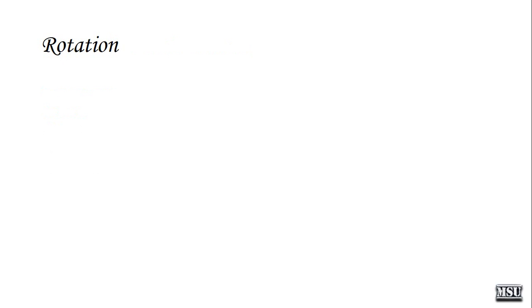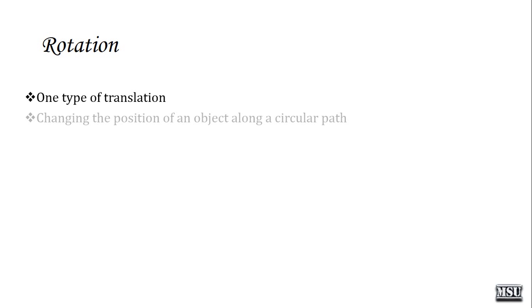Now we are going to discuss rotation. A translation is changing the position of an object in a straight line path. A rotation is also a kind of translation, but the difference is changing the position of an object along a circular path — that's what we call rotation.